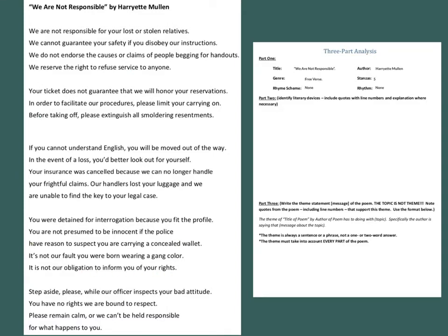Part two in our three-part analysis looks at literary devices. There's a list in the content library in the literary analysis section of your OneNote notebook. The common ones: look for alliteration — the same sound beginning words; metaphors and similes — comparisons; personification — something non-human appearing human; allusions — references to other texts, to history. When looking through, start with what stands out. In the third stanza, 'our handlers lost your luggage' is an example of alliteration — the underline shows it, so I don't really need to explain it. For similes, metaphors, personification, and allusions, you would explain how it is that literary device.